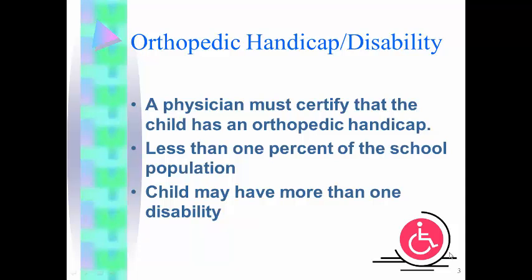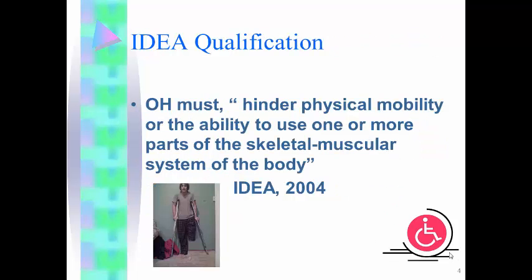You do need to keep in mind that a child can have more than one disability. For instance, a child might have cerebral palsy and also be moderately intellectually disabled, or have ADHD, or be autistic, or any of the other 14 categories or so.